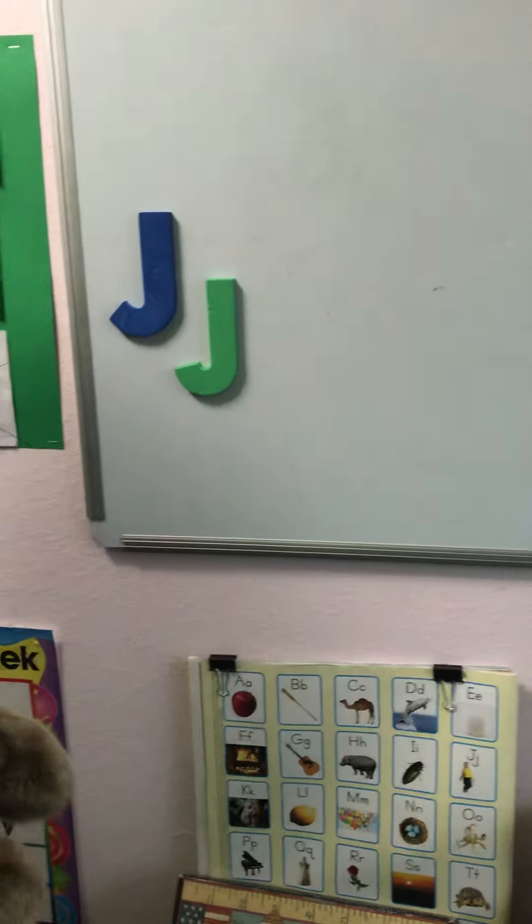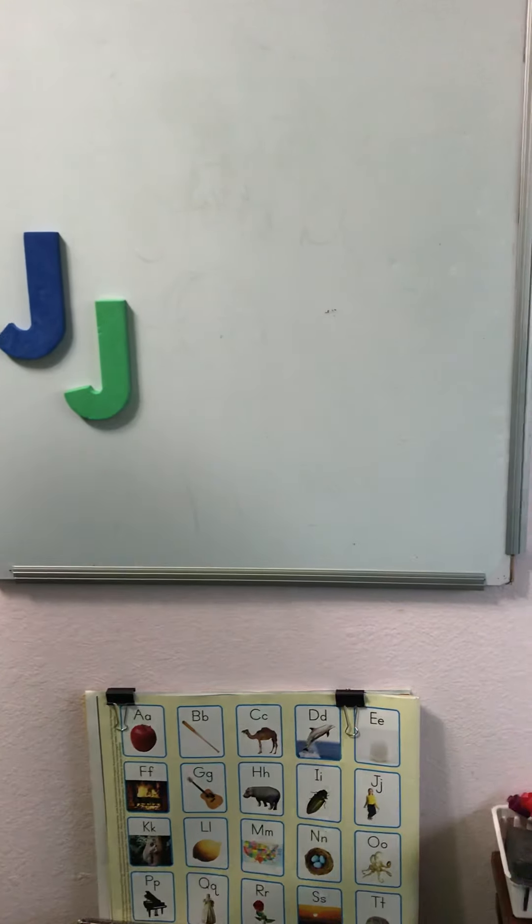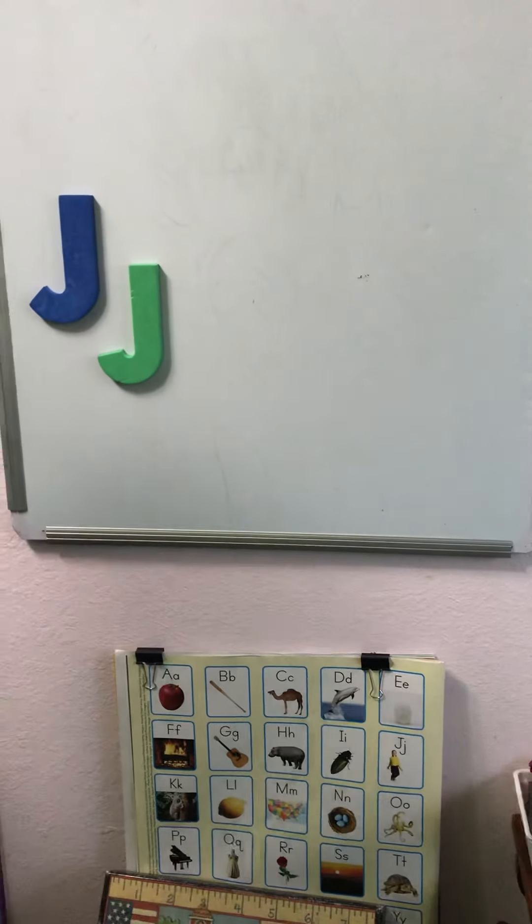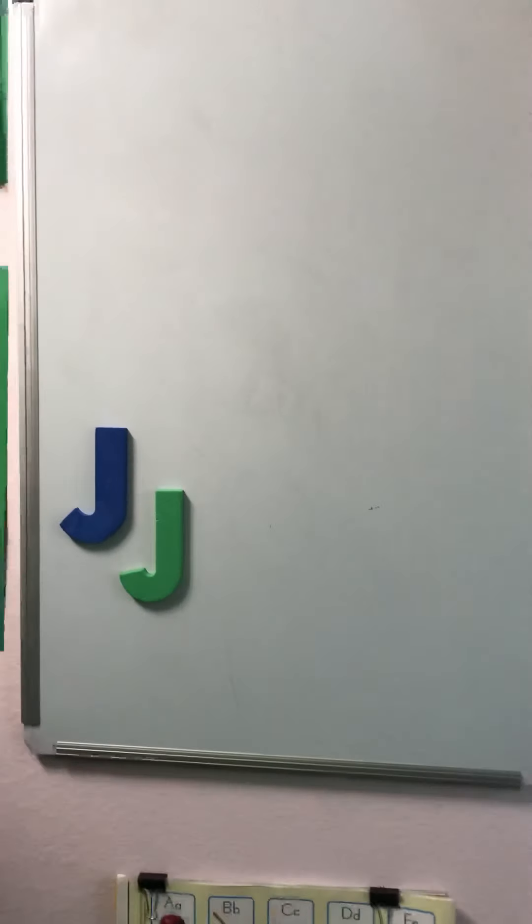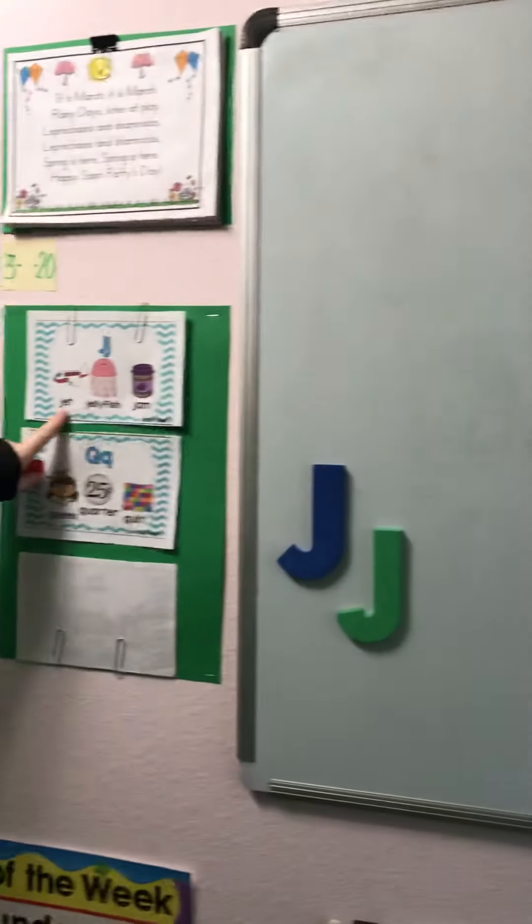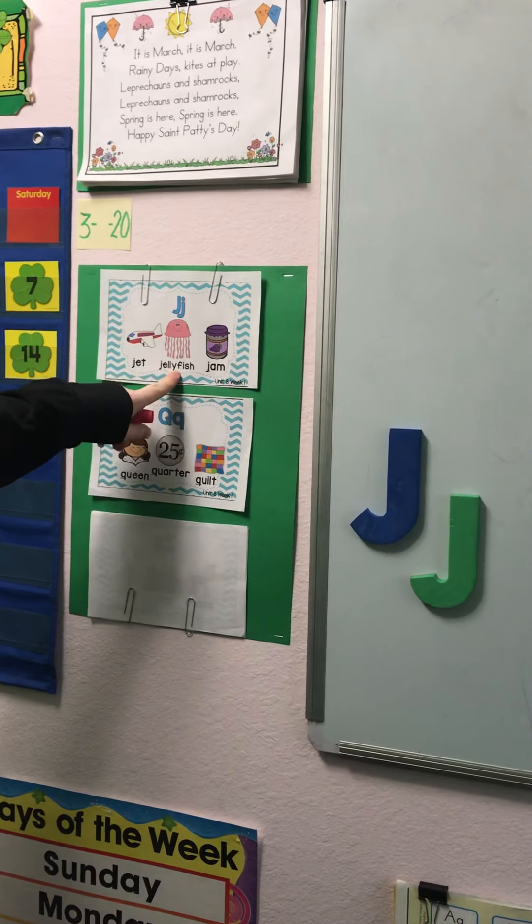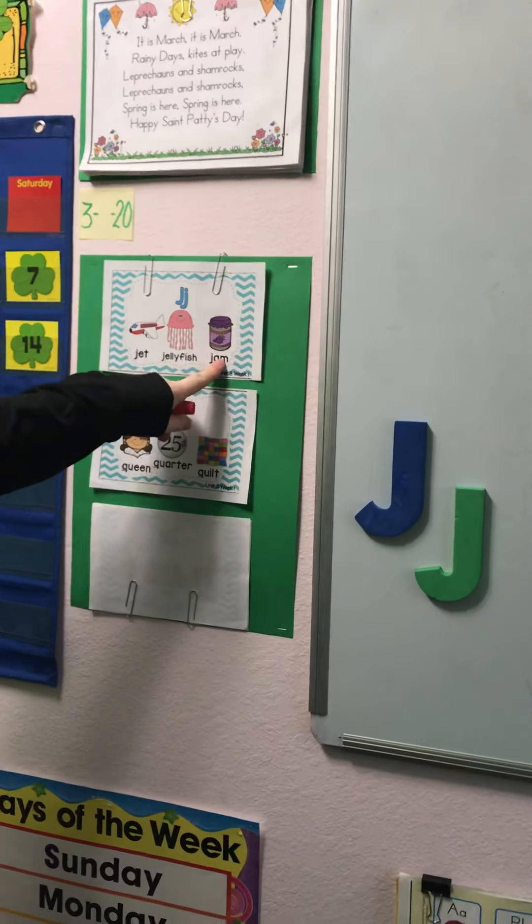So we have the letter J. I'm going to put my rabbit in here and I'm going to start thinking. What are some things that begin with J? Well, we have a jet, a jellyfish, and jam.